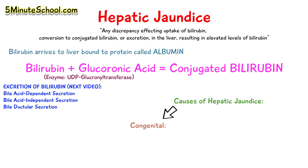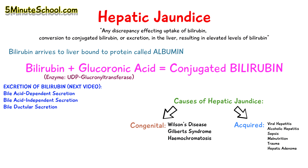Congenital causes of hepatic jaundice can be Wilson's disease, Gilbert syndrome, and hemochromatosis. Acquired causes can be viral hepatitis, alcoholic hepatitis, sepsis, malnutrition, trauma, and hepatic adenoma. These are just a few examples — going into more detail would extend the video too much, so these represent the main causes.